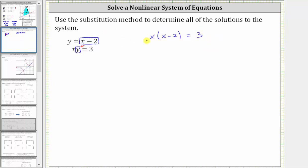And now to solve for x, we first need to clear the parentheses by distributing x, which gives us x squared minus two x equals three.